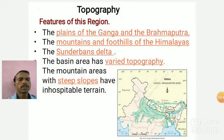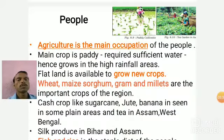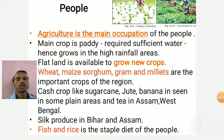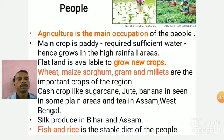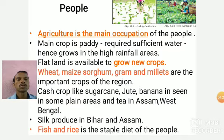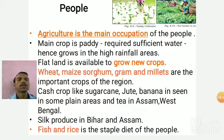Agriculture is the main occupation of these people. The major crop grown in this region is paddy, because of the heavy rainfall and enough water available for irrigation. In the plain areas, they also grow wheat, maize, sorghum, grams, and millets. Apart from these, cash crops like sugarcane, jute, and banana are seen in some plain areas. Uttar Pradesh is known for sugarcane, jute in West Bengal and Bihar, banana in West Bengal, and tea in Assam and West Bengal. Silk is also produced in Bihar and Assam. Fish and rice is the staple diet of the people.